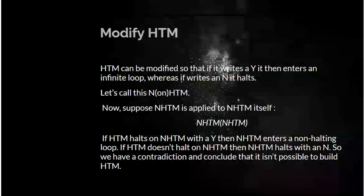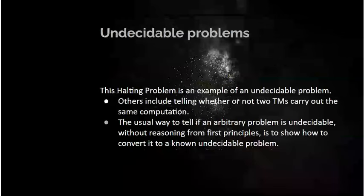This means that there are undecidable problems. Others include, for example, telling whether two Turing machines carry out the same computation. The usual way to show that some arbitrary problem is undecidable without reasoning from first principles is to show how to convert it into a known undecidable problem. Same kind of thing with NP-complete problems. You show that an NP-complete problem can be converted into a known NP-complete problem.